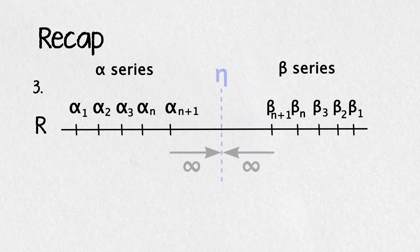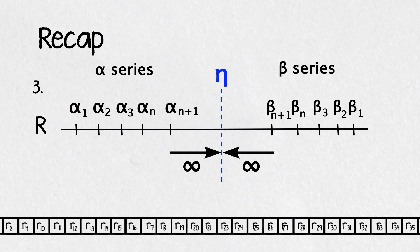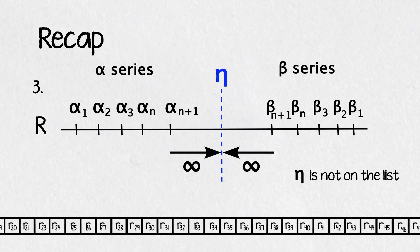Case 3, it takes an infinite amount of steps to converge to the limit eta, but then there needs to be an infinite amount of alphas and betas on the list before it, so eta itself cannot be on the list.